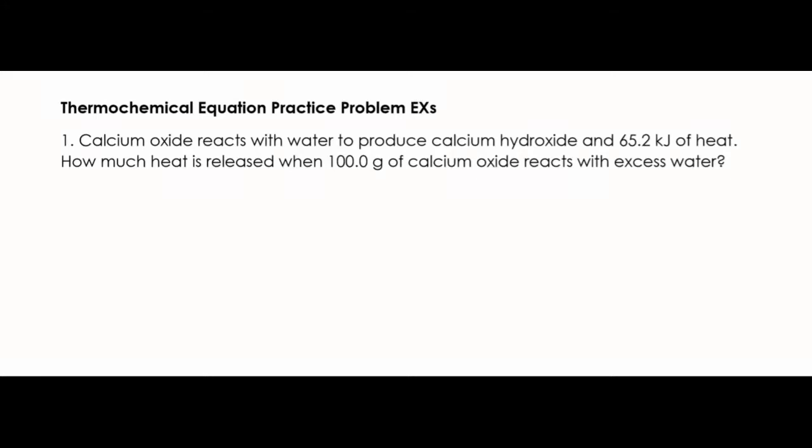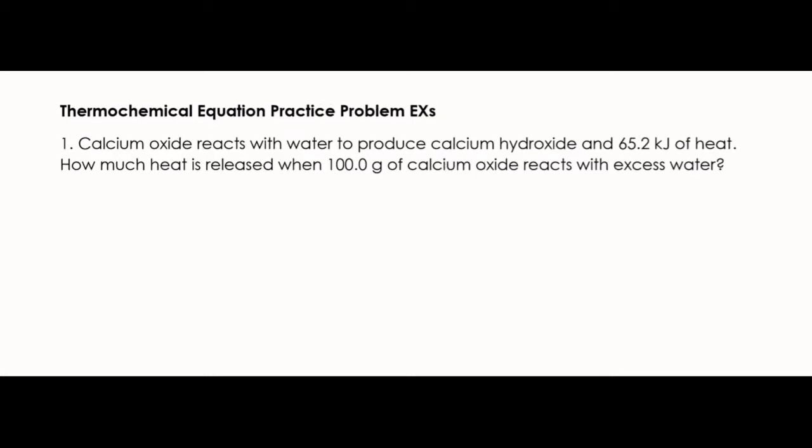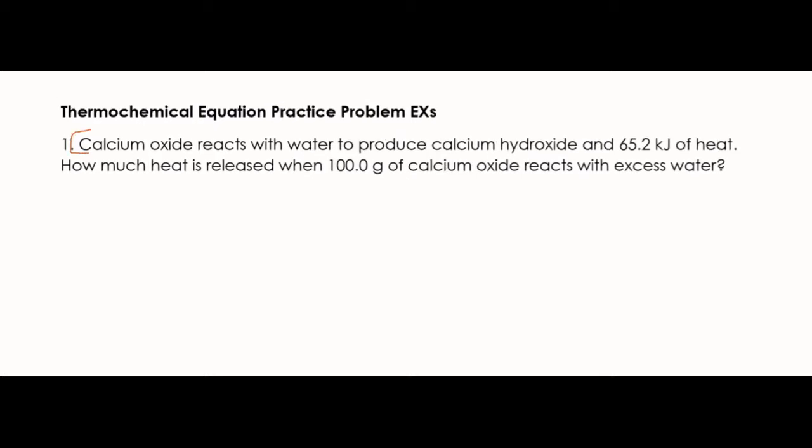This is just some practice thermochemical equation problems of how to write them and then how to do them. So it says calcium oxide reacts with water to produce calcium hydroxide and 65.2 kilojoules of heat. This whole top section is our equation that we're going to need to write. The second part is the actual question.